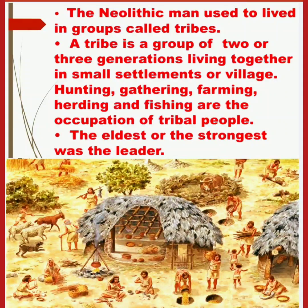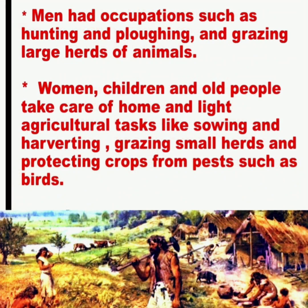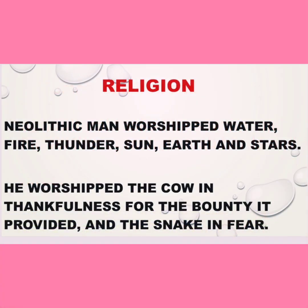A tribe is a group of two or three generations living together in small settlements or a village. Hunting, gathering, farming, herding, and fishing are the occupations of tribal people. The eldest or the strongest was the leader. Men had occupations such as hunting, ploughing, and grazing large herds of animals. Women, children, and old people took care of the home and light agricultural tasks like sowing and harvesting, grazing small herds, and protecting crops from pests such as birds.